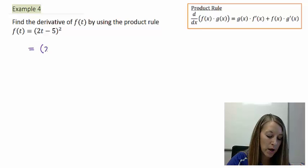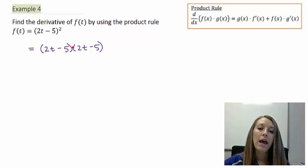But we can make it look like a product. We know 2t minus 5 quantity squared is the exact same thing as 2t minus 5 times 2t minus 5, where it is multiplication. And in fact, we have to do so. That's the only way we know how to do it at this time.